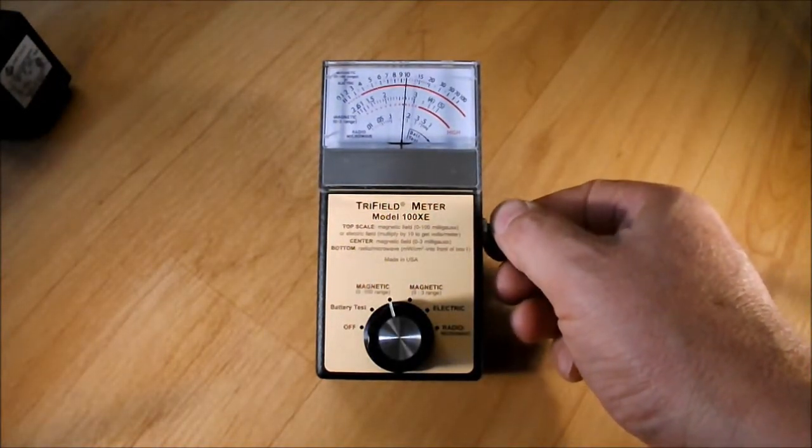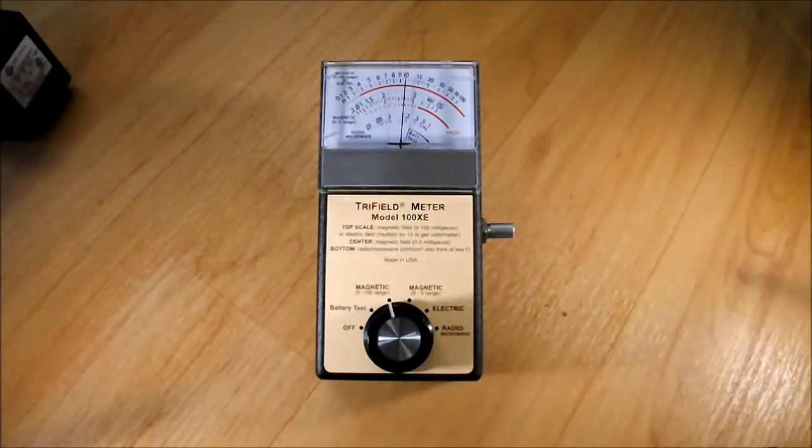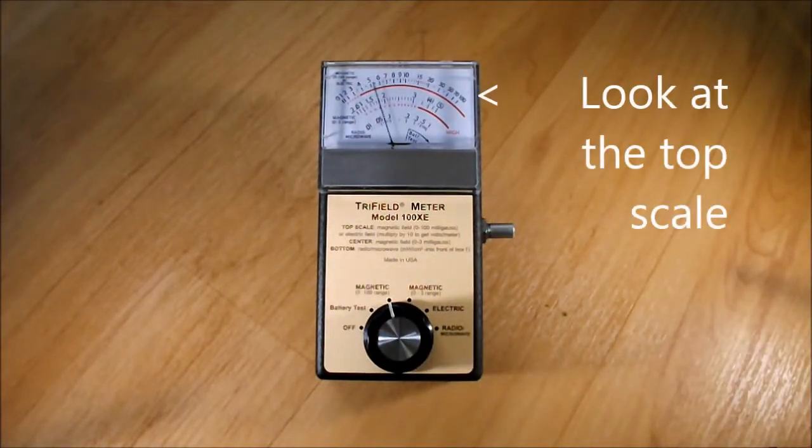The knob on the side of the meter adjusts the alarm threshold. It is best explained with an example. Let's use 10 milligauss.